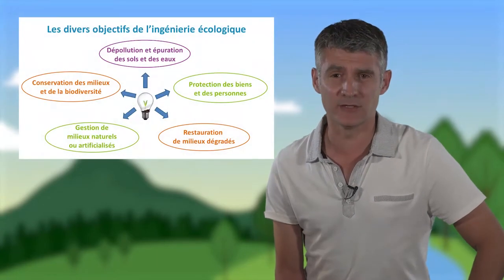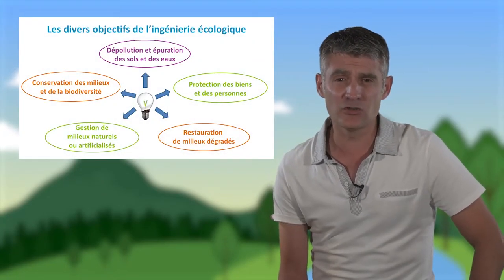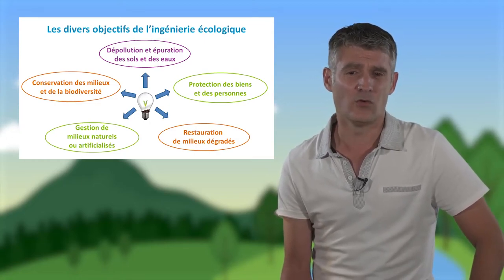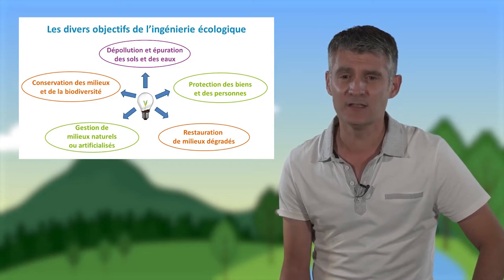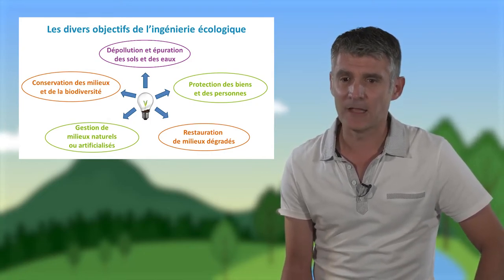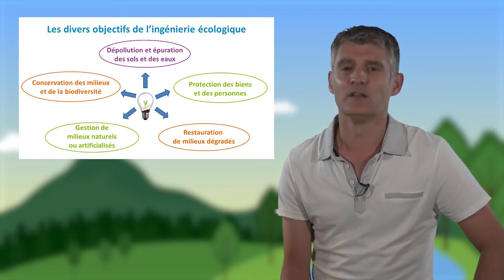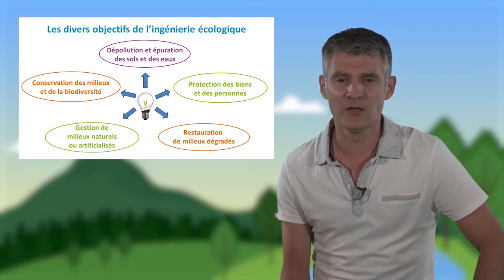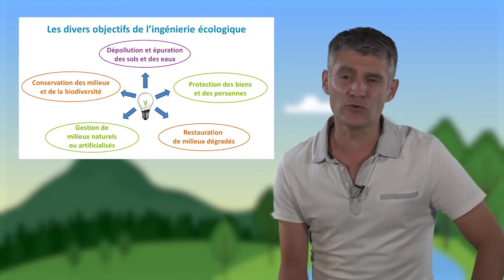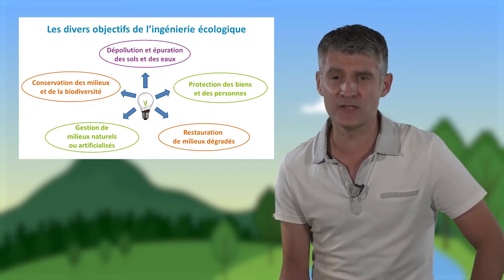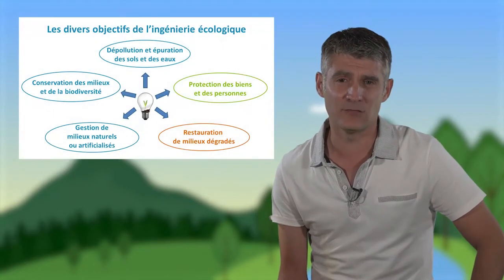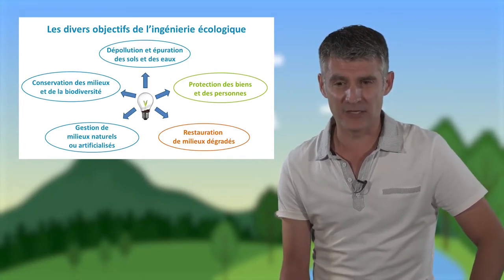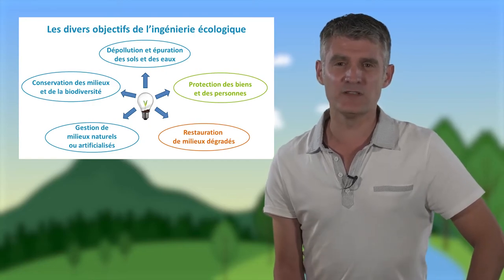Quelle est la place de l'ingénierie écologique dans tout ça ? L'ingénierie écologique recouvre des actions aux objectifs divers : la conservation des milieux et de la biodiversité, la dépollution et l'épuration des sols et des eaux, la protection des biens et des personnes, la restauration du milieu dégradé, et plus largement la gestion du milieu naturel ou artificialisé. Parmi ces objectifs, on trouve ceux liés à la GEMAPI, notamment la protection des biens et des personnes et la restauration du milieu dégradé.